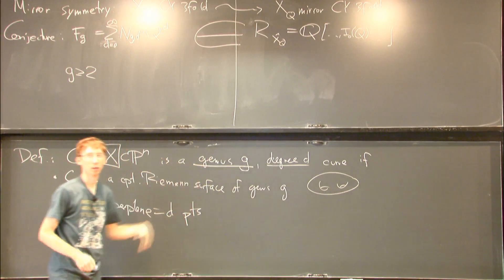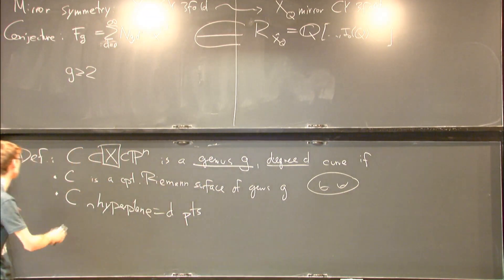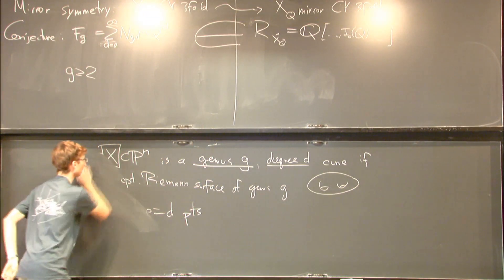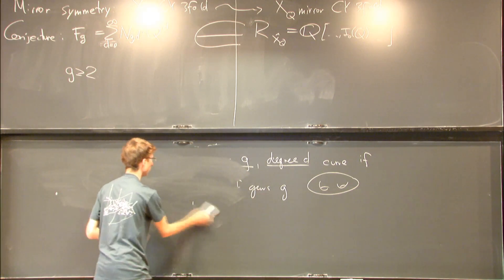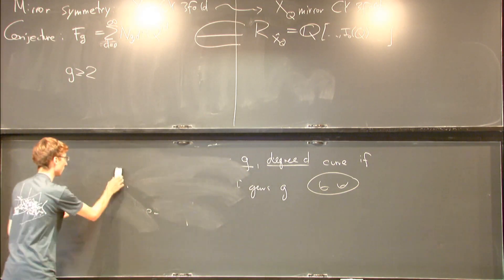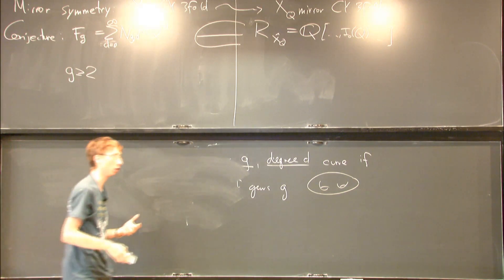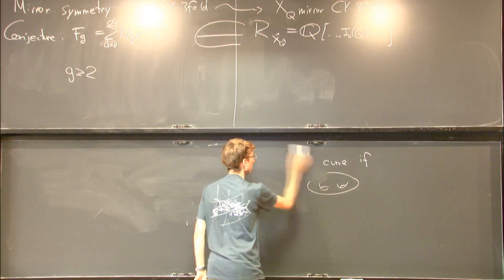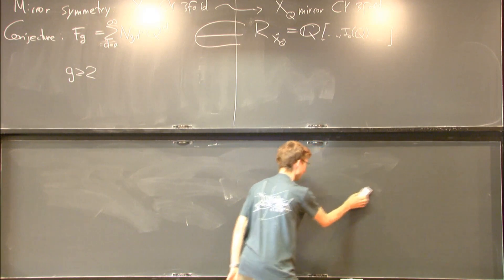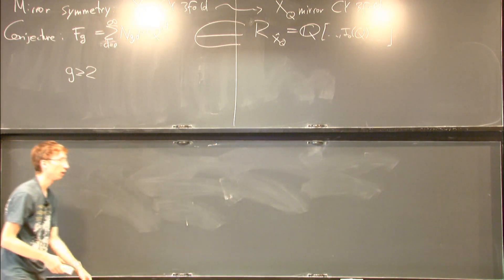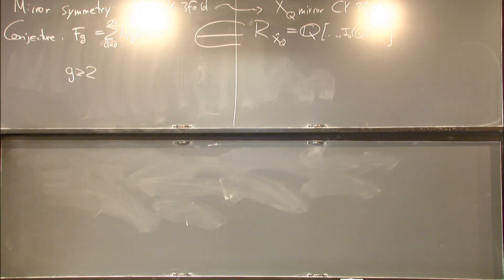So what is known about this conjecture? The conjecture comes from physics. Physicists Candelas, De La Ossa, Green, Parkes, Vafa, Cecotti, Oguri made this conjecture in the early 90s.